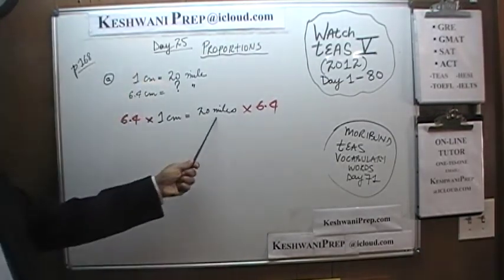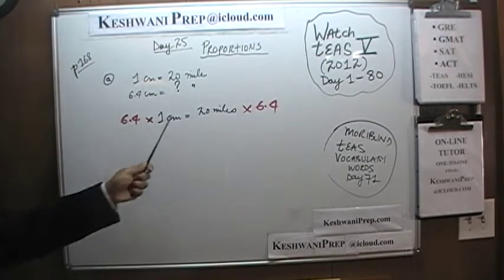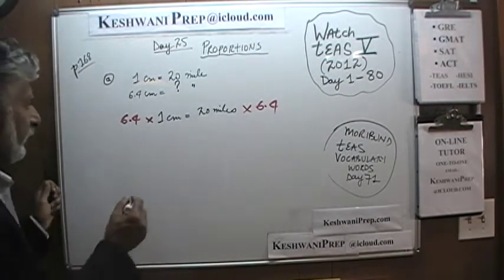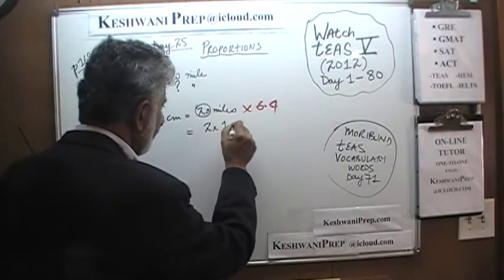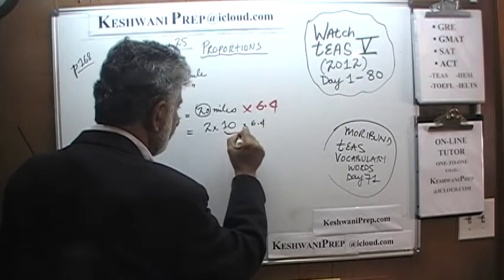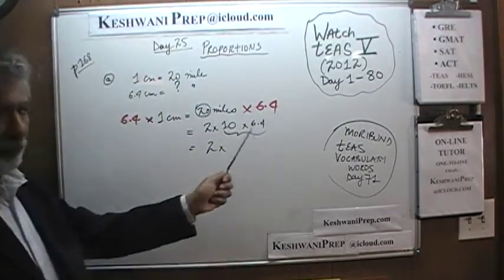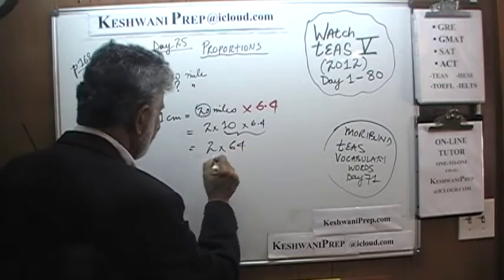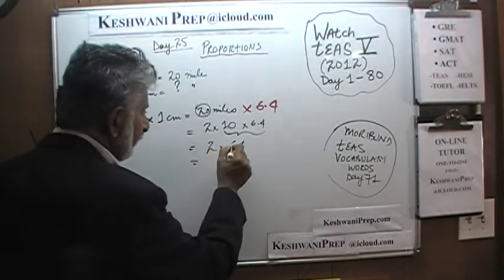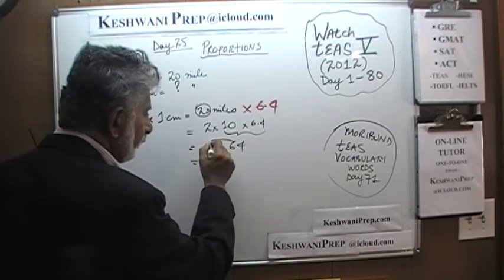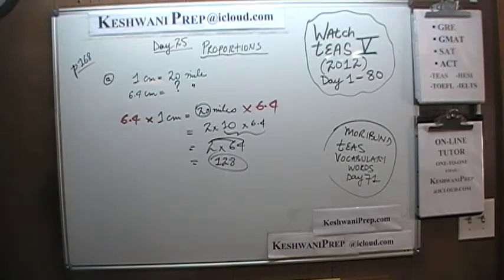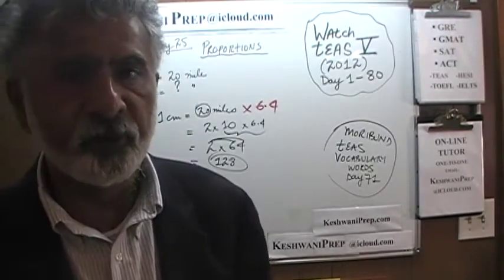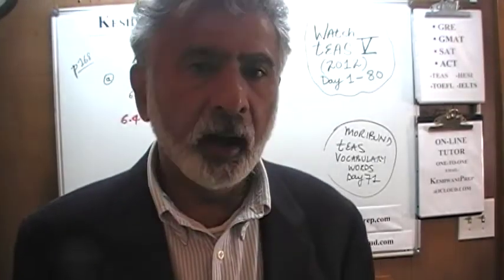If one centimeter equals 20 miles, then 6.4 centimeters must equal 6.4 times 20. We write 20 as 2 times 10 times 6.4. We know that 10 times 6.4 is 64, and 2 times 64 is 128 — so the answer is 128 miles. Apparently these two cities, which appear 6.4 centimeters apart on the map, are in reality 128 miles away from each other.